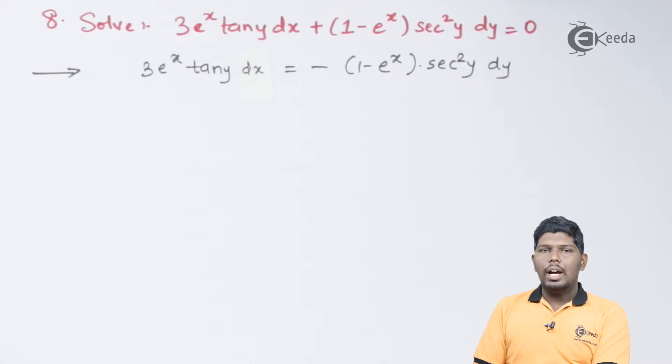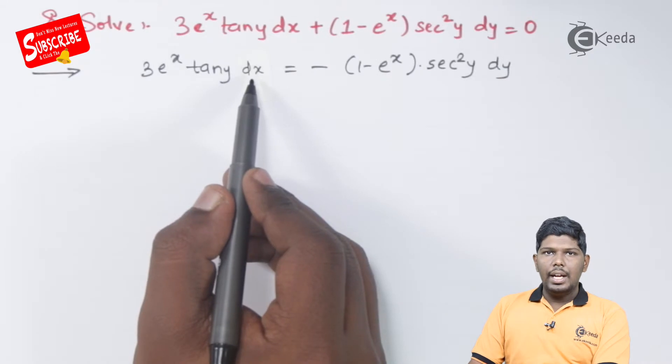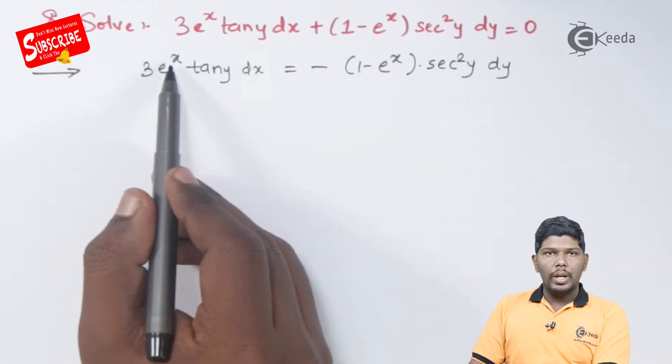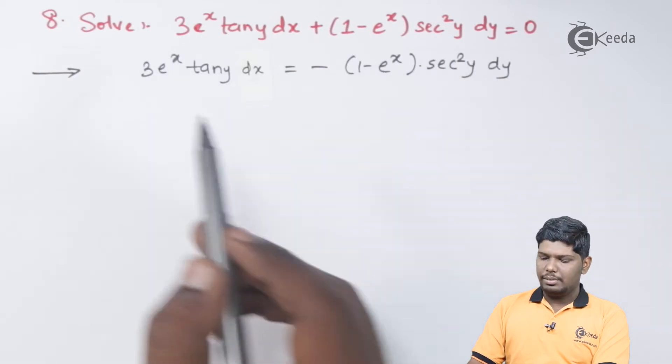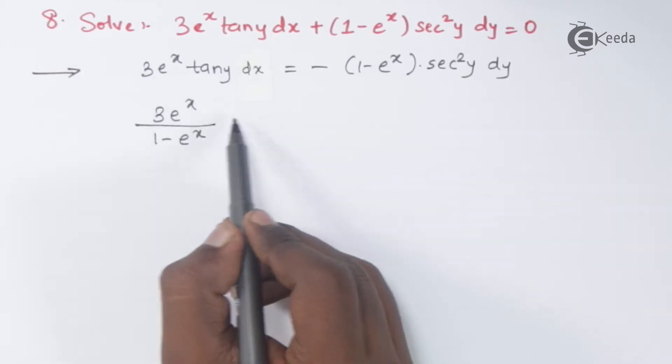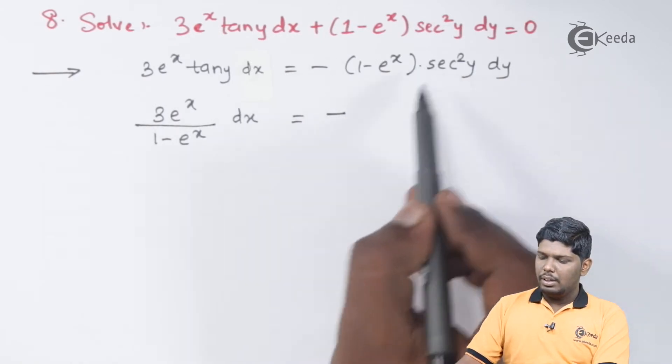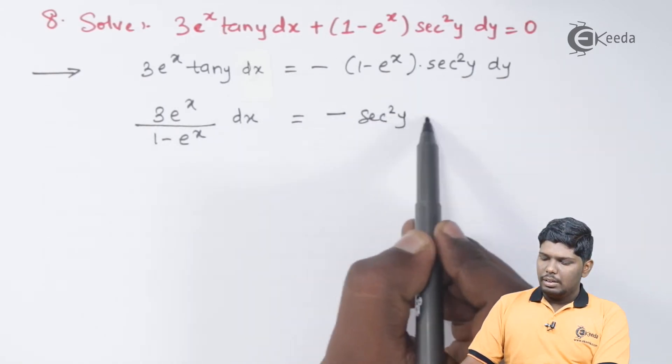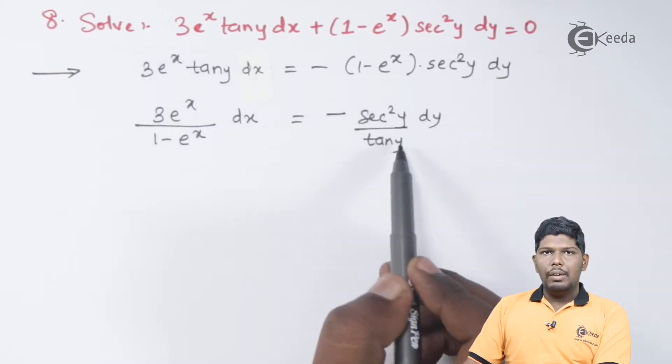Now, dx and dy are in numerator. So, let us interchange their variables so that one side will be of y and the other side will be of x. With dx, we can keep 3 e raise to x and on the right hand side, we will take 1 minus e raise to x. On the right hand side, we have minus of sec square y dy and tan y will be divided.